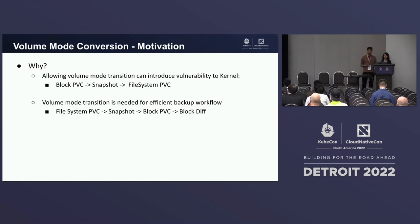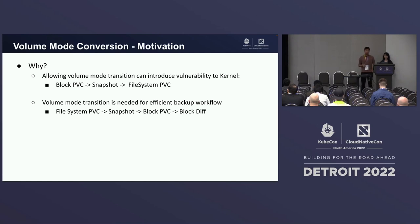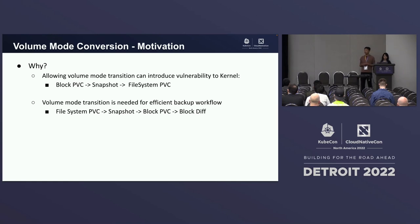The first gap is volume mode conversion. The volume snapshot feature allows you to take a point-in-time snapshot of a persistent volume in your Kubernetes cluster. It also allows you to restore a block volume into a filesystem volume and vice versa. However, this volume mode transition can introduce vulnerability to the kernel and is considered a CVE. If you put malware on a block volume, take a snapshot of it, and accidentally restore it into a filesystem volume, that will cause your kernel to crash — potentially crashing the entire node.